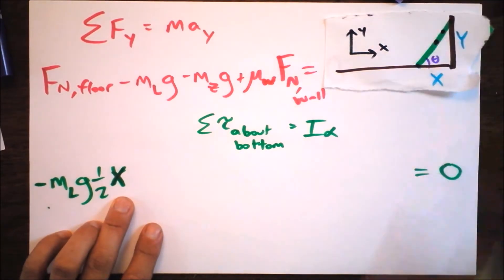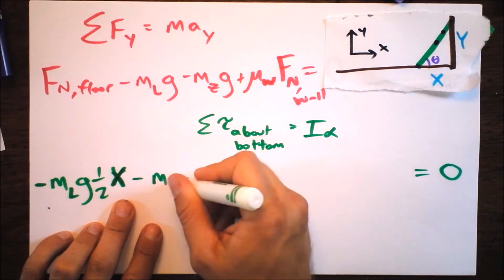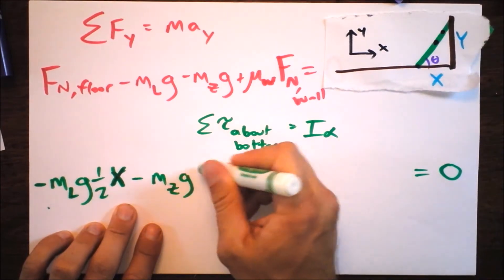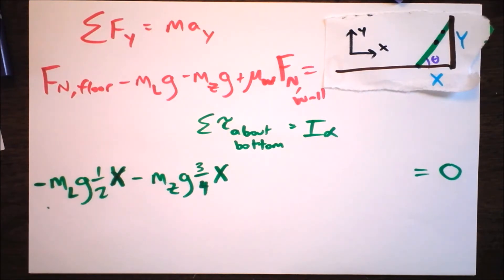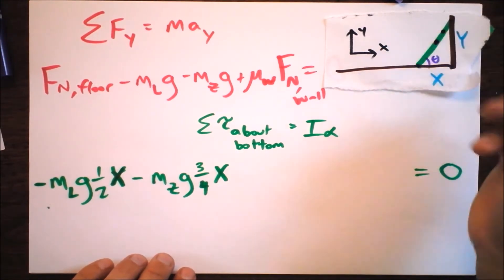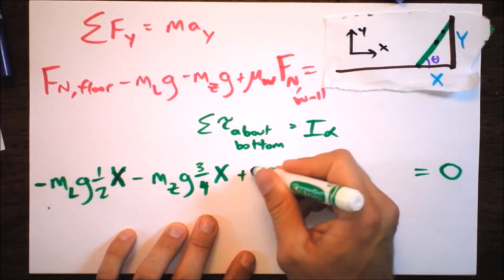Our next term as we continue up and to the right, we're going to get another torque that tends to rotate the entire ladder clockwise. So that's going to be minus mass of the zombie times baby g. And we said that we were three quarters of the way up, so that's going to be three quarters times X. Those are two negative torques.